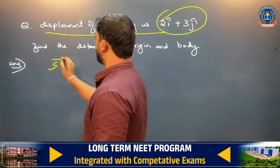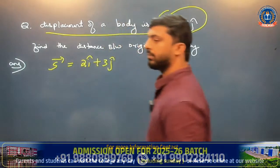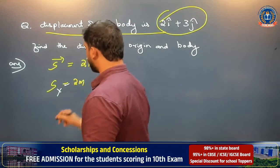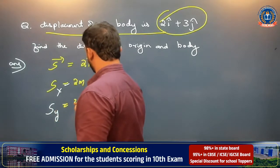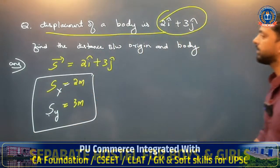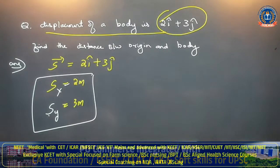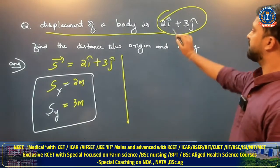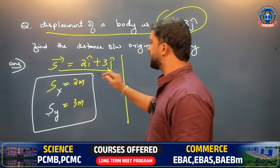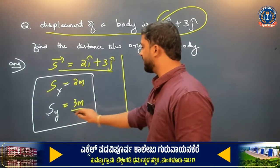If displacement is 2i plus 3j cap, the body has travelled 2 meters in the x-axis and 3 meters in the y-axis. Distance travelled in the x-axis is 2 meters, and distance travelled in the y-axis is 3 meters.